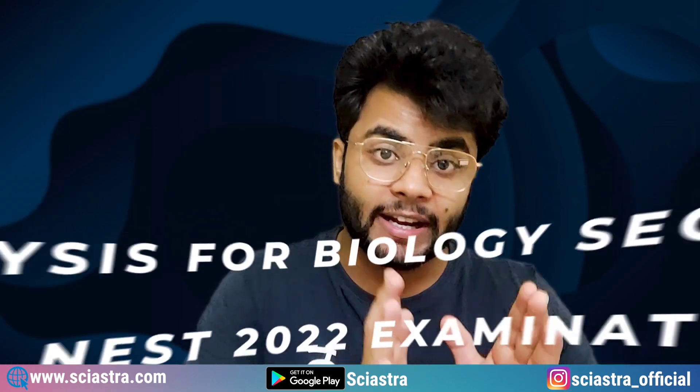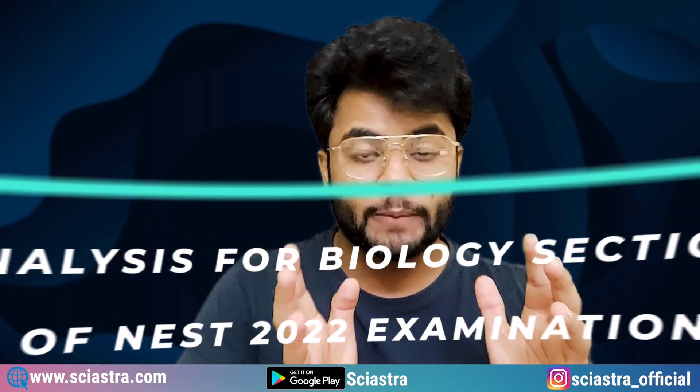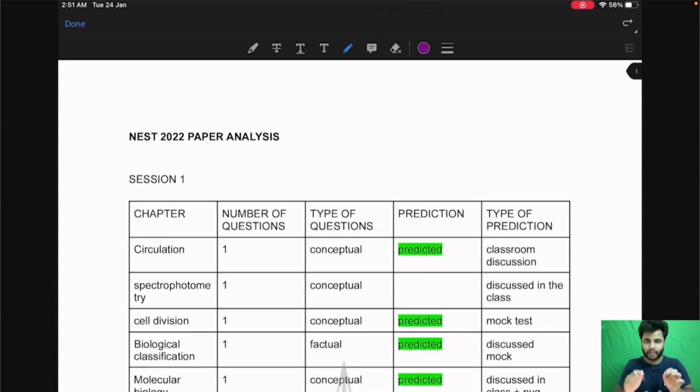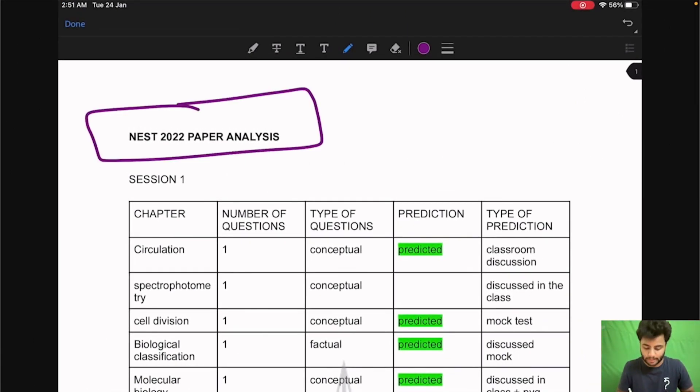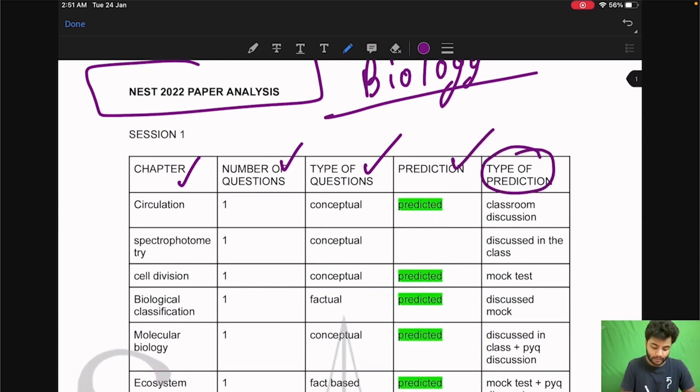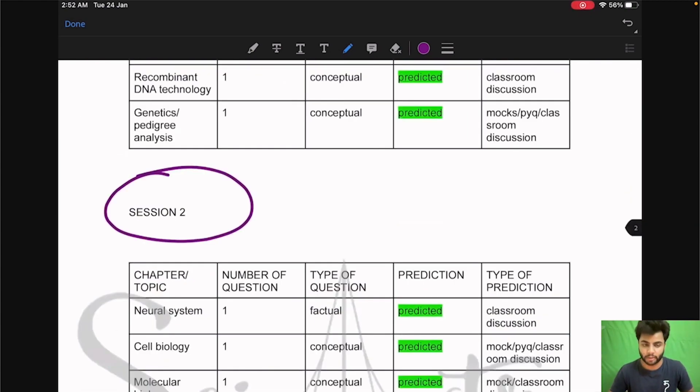Now let's proceed with the analysis for biology section of NEST 2022 examination and at the end I will also conclude some remarks and make some remarks about the analysis that we did. So hi everyone, today we are going to see the analysis of NEST 2022 exam biology section. And in this first I will show you the type of chapters which were asked, then number of questions, then type of question that came from that topic and chapter, finally the prediction and the type of prediction for each one. For session 1 and also for session 2 for both the papers of NEST 2022 we are going to discuss.